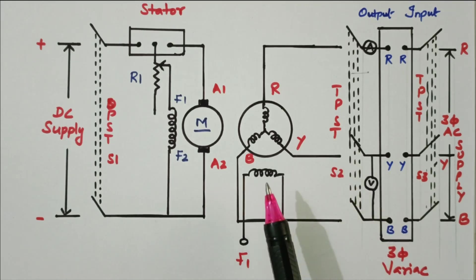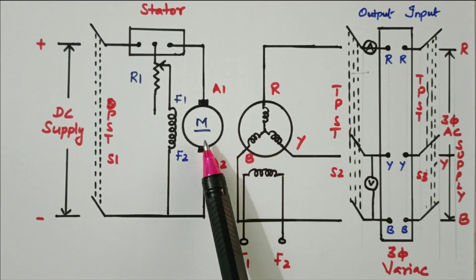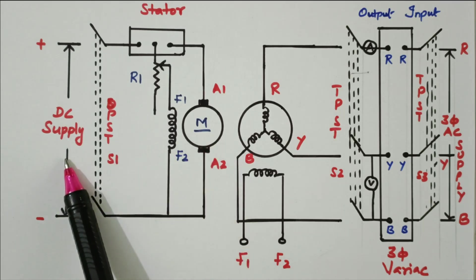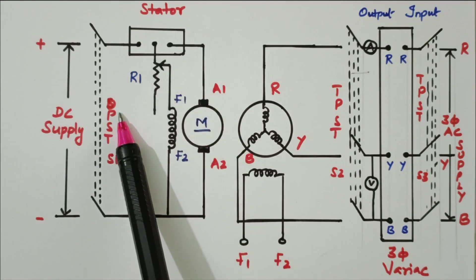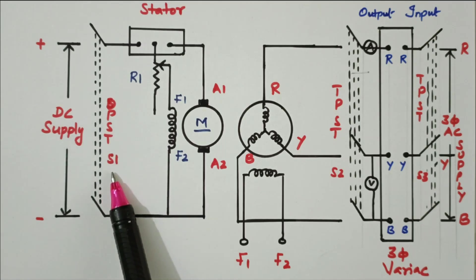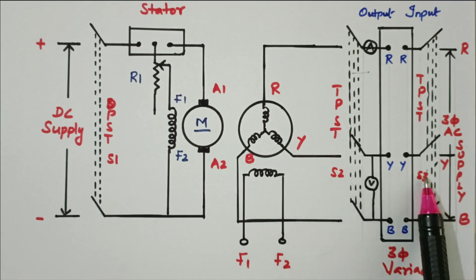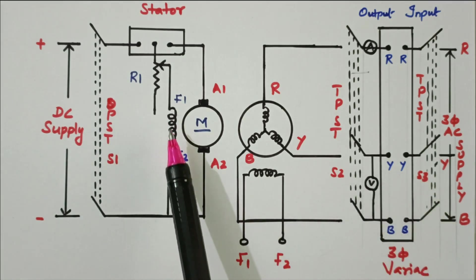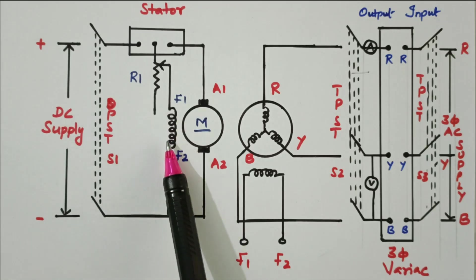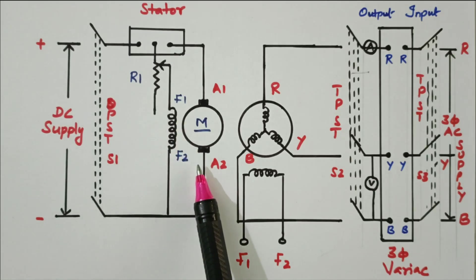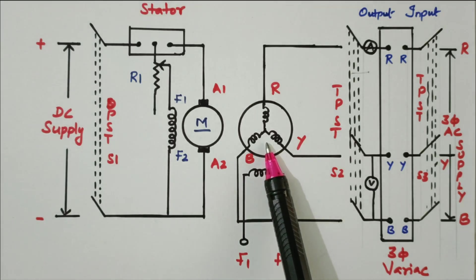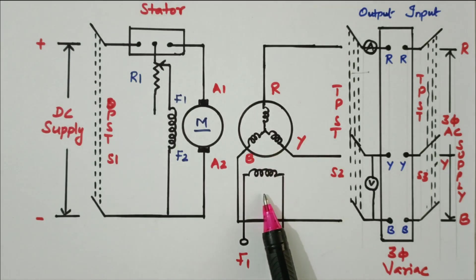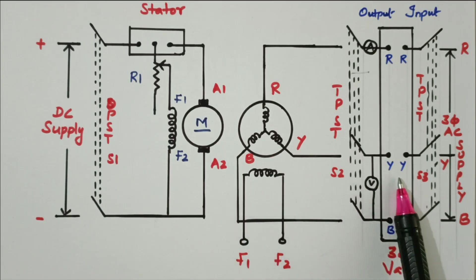The armature winding is supplied through the three-phase variac. The field winding is kept open. This three-phase variac is coupled with a DC motor connected to the DC supply through a DPSD (double pole single throw) switch S1, with a three-phase starter. By adjusting the field winding of the motor, we can vary the speed of the motor.